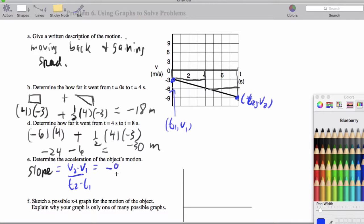So that'll be negative nine minus negative three over eight minus zero, which is going to be... So I have negative nine, negative three. So we're going to end up getting negative six over eight which is negative three fourths, which is negative 0.75 meters per second squared.